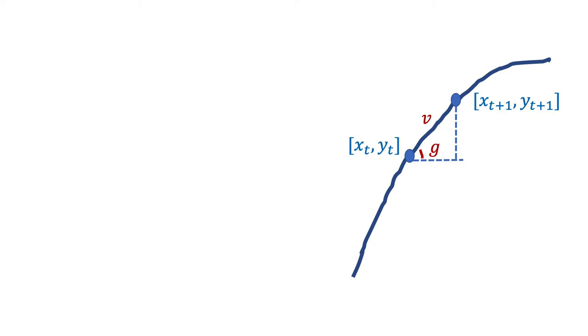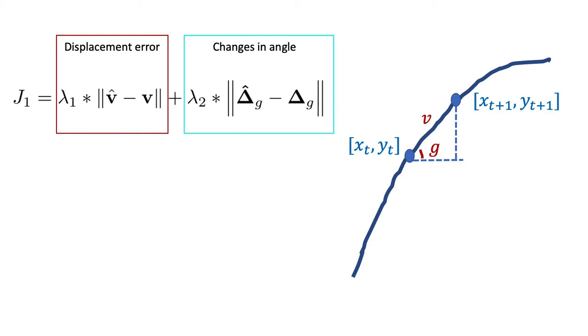Then, the first model minimizes the difference of angle changes between prediction and ground truth angles to encourage the model to learn the shape of the trajectory.